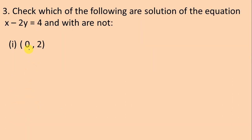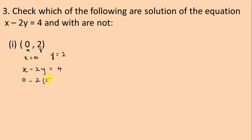Let's solve the first part. The given point is (0, 2). We have to check whether this point is a solution of the equation. We write the equation: x minus 2y is equal to 4. Here 0 represents x and 2 represents y. We take x = 0, y = 2 and substitute: 0 minus 2 times 2 is equal to 4, giving 0 minus 4 equals minus 4.